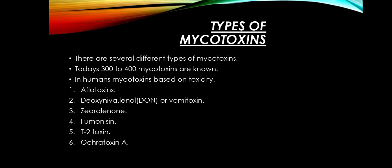There are several different types of mycotoxins. Today, 300 to 400 mycotoxins are known. In humans, mycotoxins are classified based on toxicity: Number 1 — Aflatoxin; Number 2 — Deoxynivalenol or Vomitoxin; Number 3 — Zearalenone; Number 4 — Fumonisin; Number 5 — T-2 toxin; and Number 6 — Ochratoxin A.